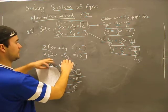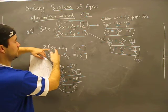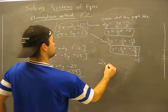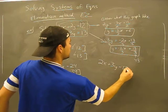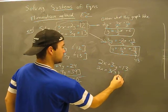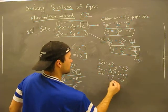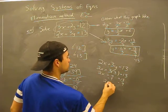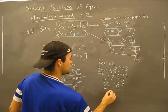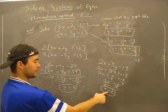All we have to do is put Y equals three into one of the original equations — we want an easy one. I'll pick two X plus three Y equals 13. So: two X plus three times three equals 13. Two X plus nine equals 13. Minus nine on both sides: two X equals four. Divide by two: X equals two. My solution point is X equals two, Y equals three.